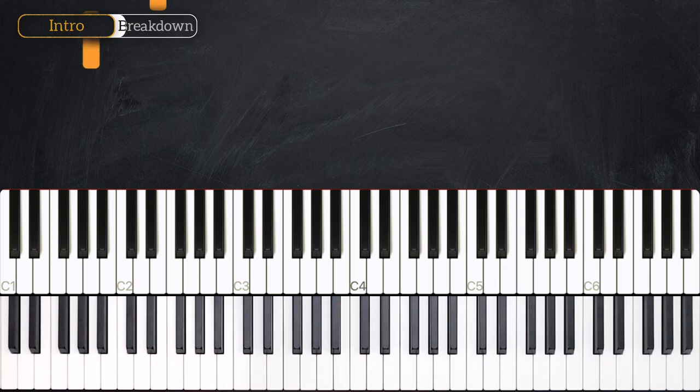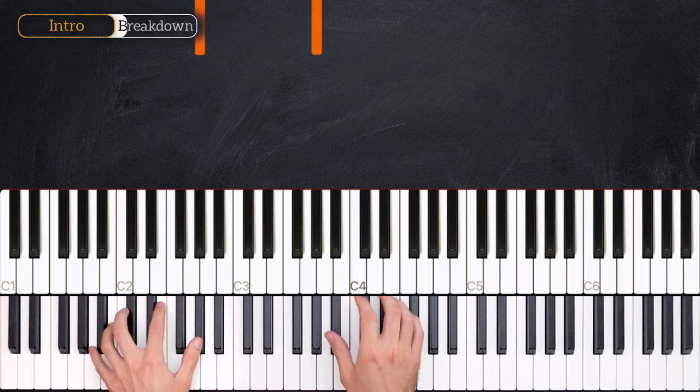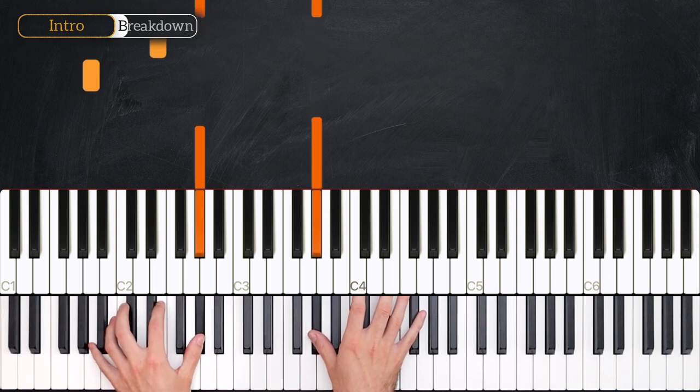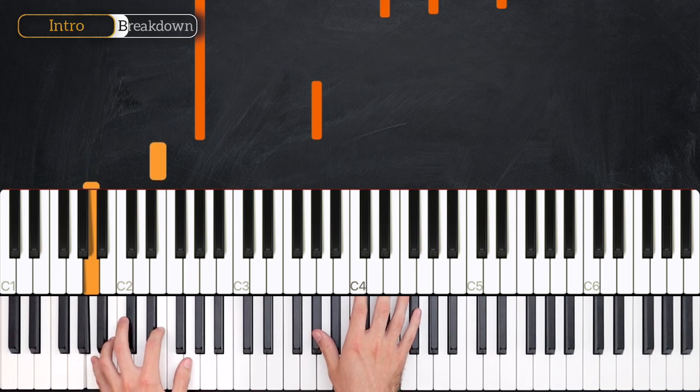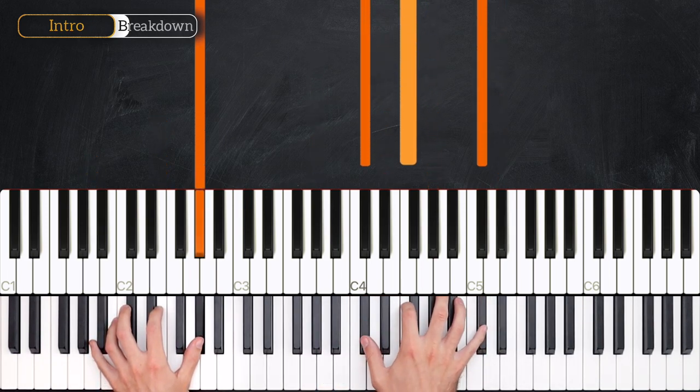So first of all, this bass line is A, E and A-flat. And then as you play that A-flat, your right hand will join in an octave higher with another A-flat. And then you'll go up to these first two chords that you learned in the intro.